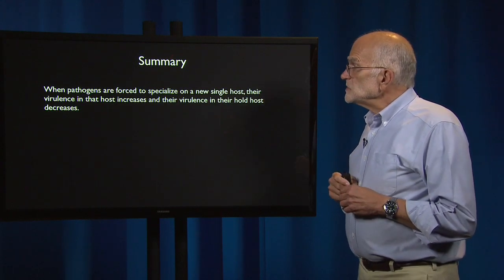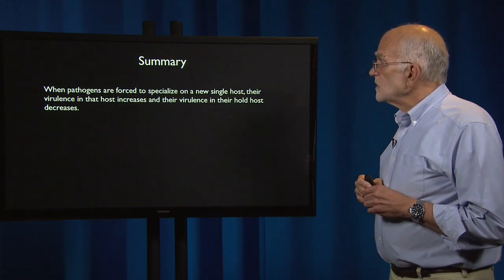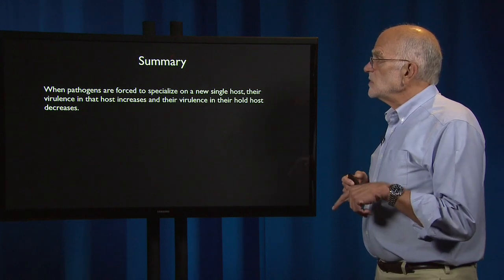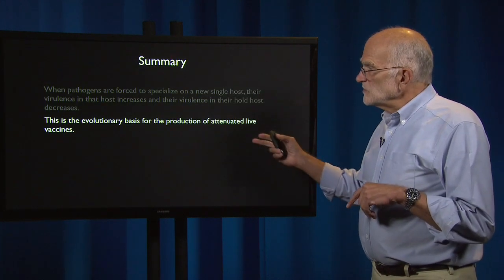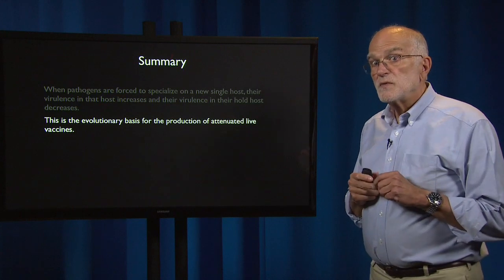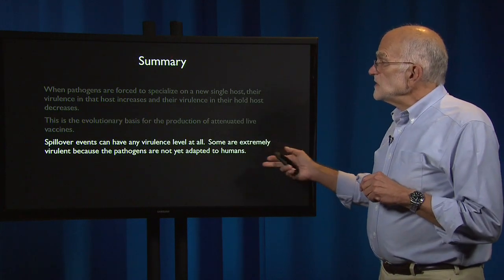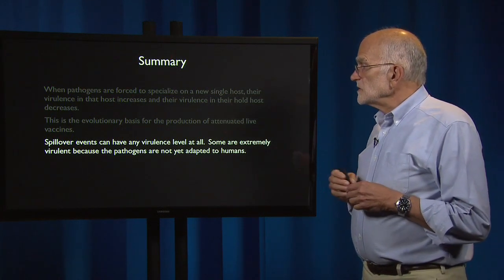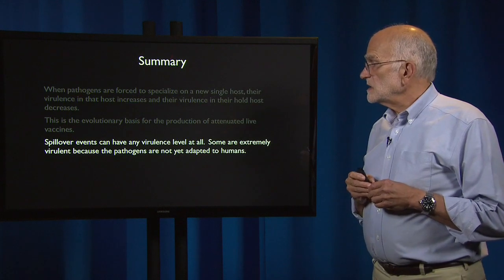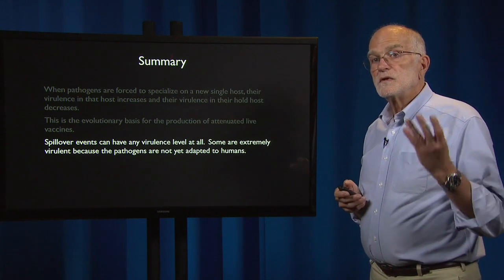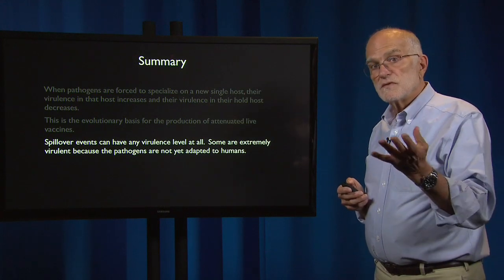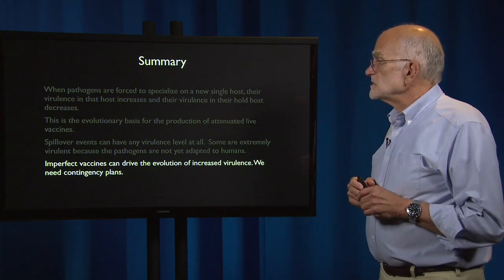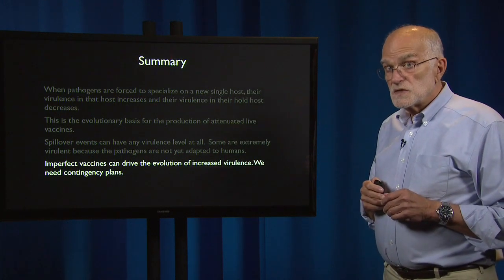To summarize: when pathogens are forced to specialize on a new single host, their virulence in that host increases and their virulence in their old host decreases — that is the evolutionary basis for producing attenuated live vaccines. Spillover events can have any virulence level; some are extremely virulent because the pathogens are not yet adapted to humans, as is the case with Ebola, MERS, SARS, and rabies. Imperfect vaccines can drive the evolution of increased virulence, and we are going to need contingency plans for them.